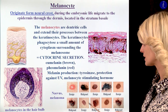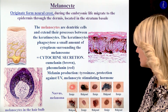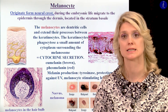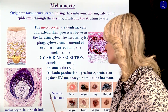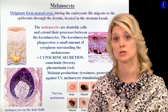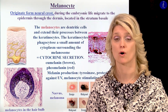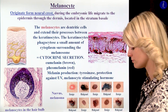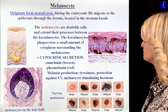They form different nevi, and also the melanoma — unfortunately the malignant form of this — can develop from the group of melanocytes within the skin.